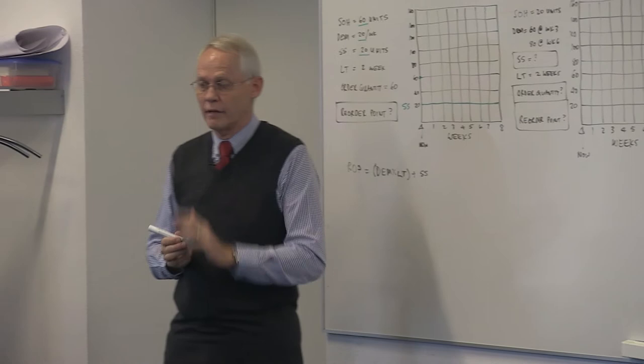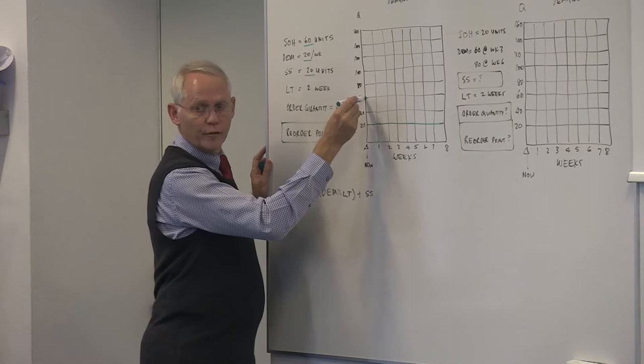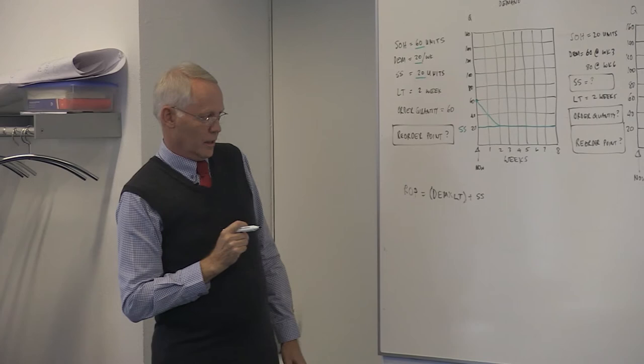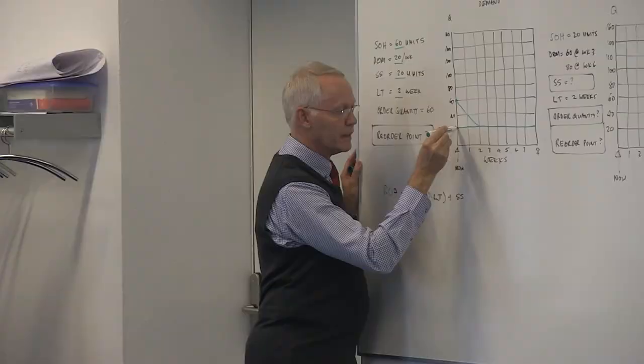I'm sitting on 60 after week one, what will my number now be? 60, 40. Next week? Oops, now I've got a problem. Okay, my lead time is two weeks. So, I should order two weeks before I hit the trouble. One week, two weeks. So, at this point here, in fact, at that point, I'm going to say here, that's my reorder point.